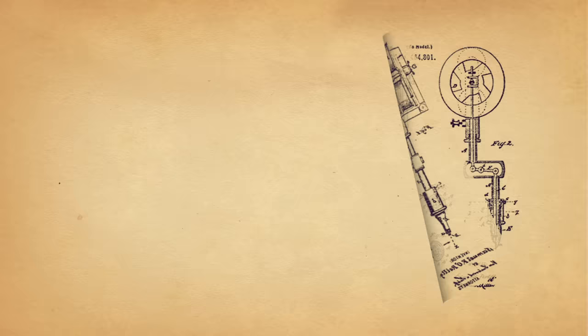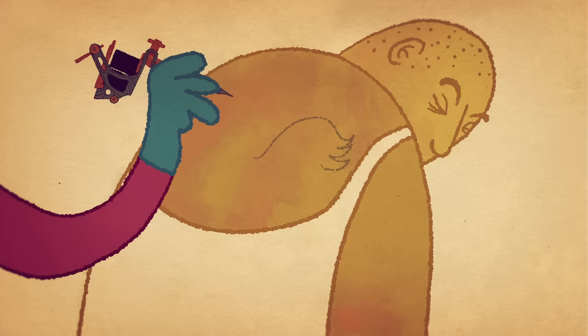The simple answer is that tattooing involves getting pigment deeper into the skin than the outermost layer that gets shed. Throughout history, different cultures have used various methods to accomplish this. But the first modern tattooing machine was modeled after Thomas Edison's engraving machine, and ran on electricity.